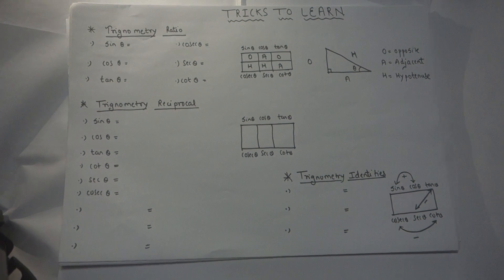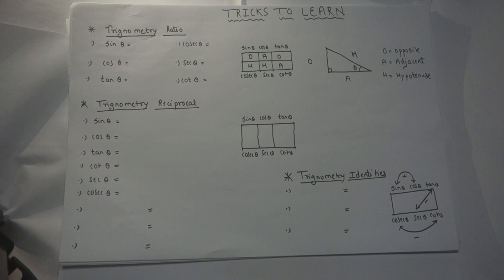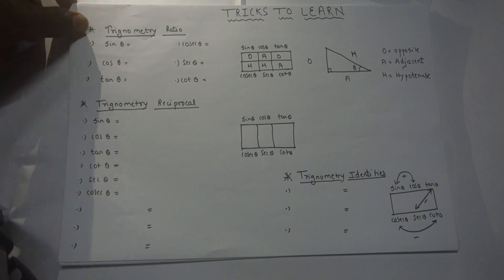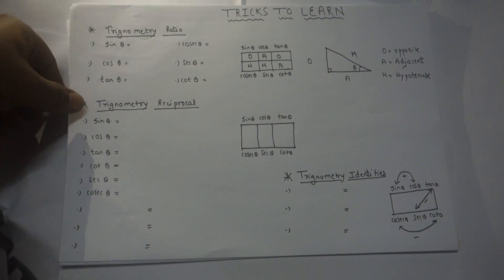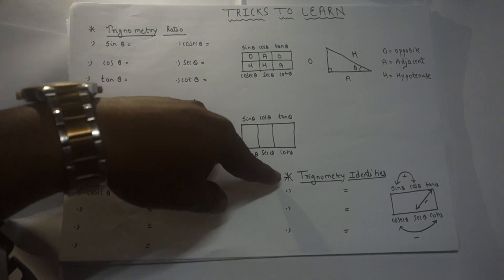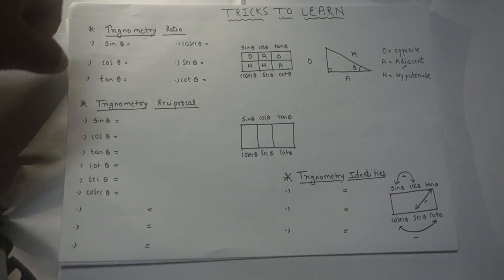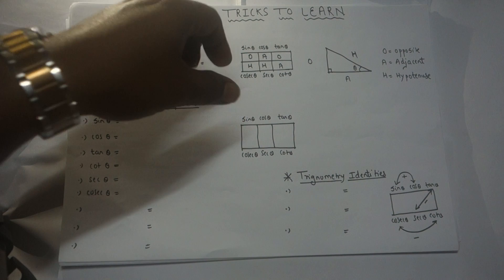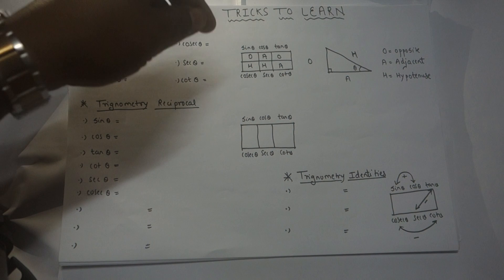Good morning everyone. Today we will see how to memorize the trigonometric formulas in the simplest and easiest way. We will cover three topics: trigonometric ratios, trigonometric reciprocals, and trigonometric identities. Keep this box in mind — there are 18 formulas fitted in it. You might be thinking, 18 formulas in this small box? Yes, it is. Let's begin.